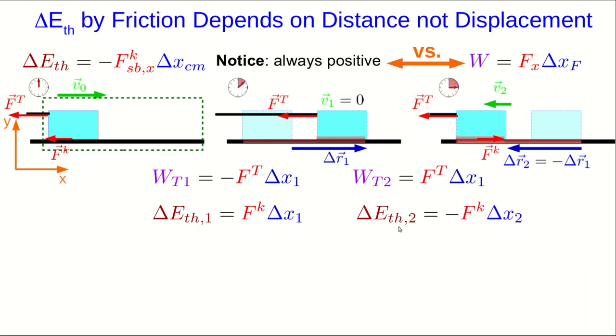The thermal energy, again, we have negative, but now that component is positive, since the friction is pointing the other way, times delta x2. Delta x2 is negative delta x1.